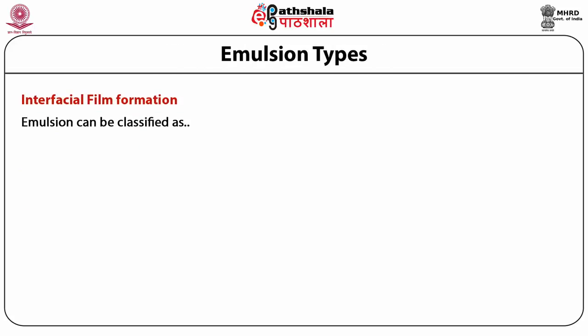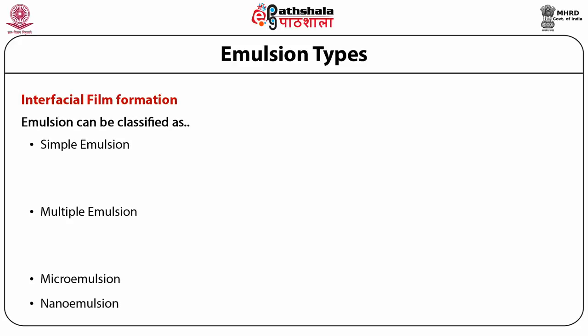Emulsions can be classified as simple emulsion, multiple emulsions, micro emulsions and nano emulsions. Simple emulsions include oil-in-water and water-in-oil types. Multiple emulsions follow the same pattern but comprise three phases: water-in-oil-in-water type and oil-in-water-in-oil type.